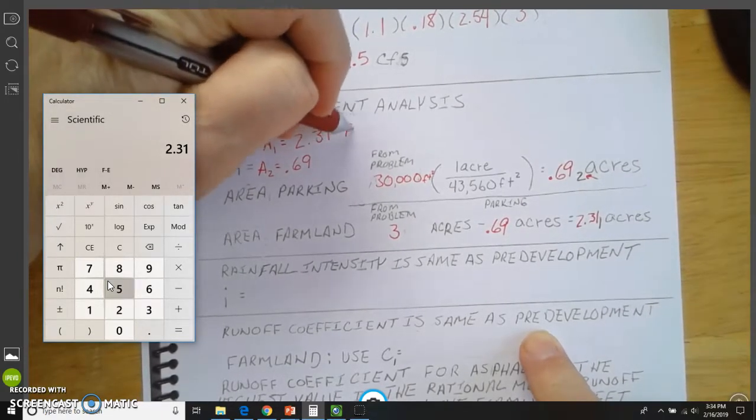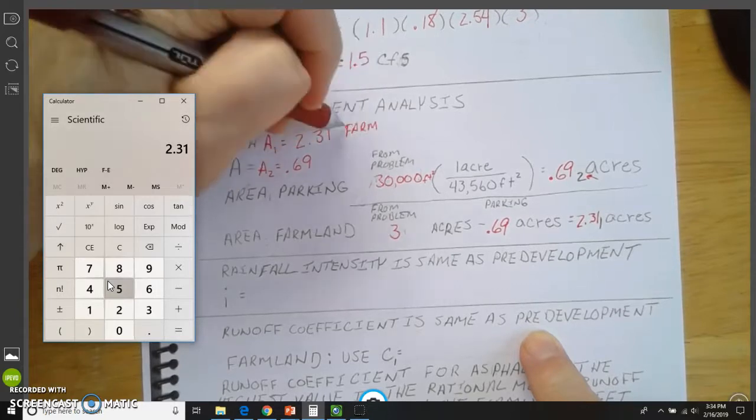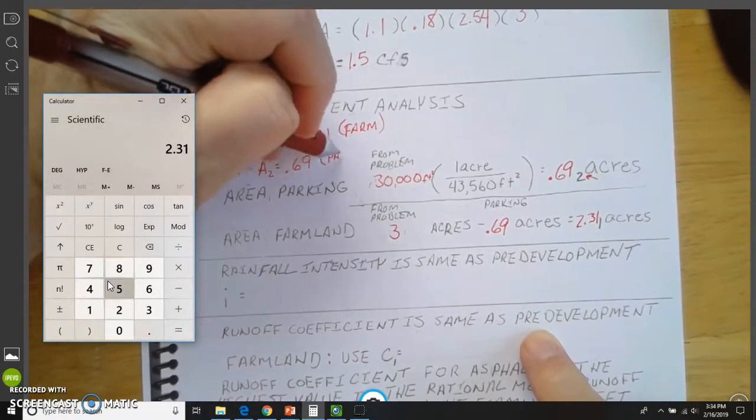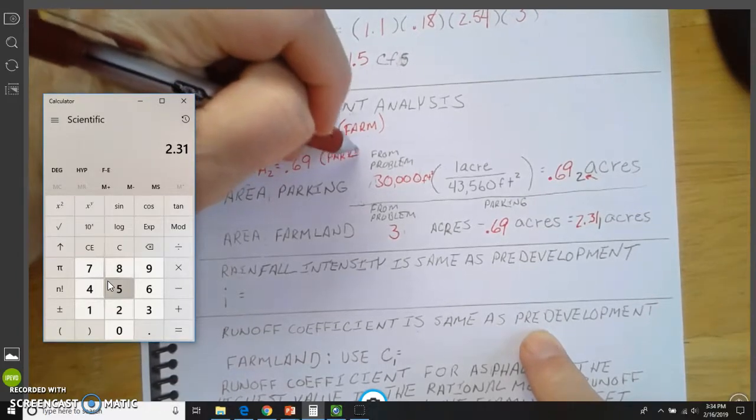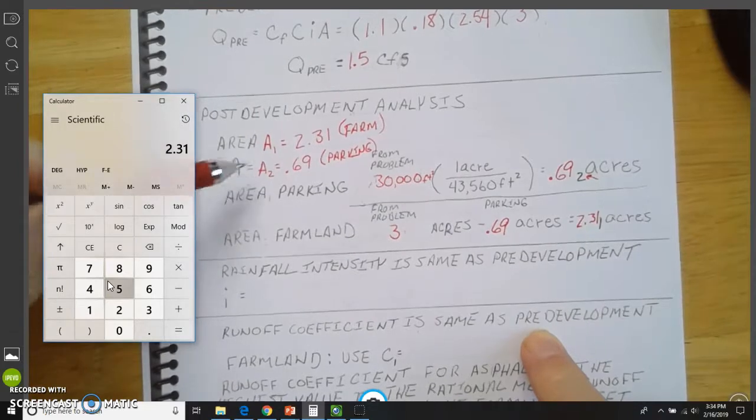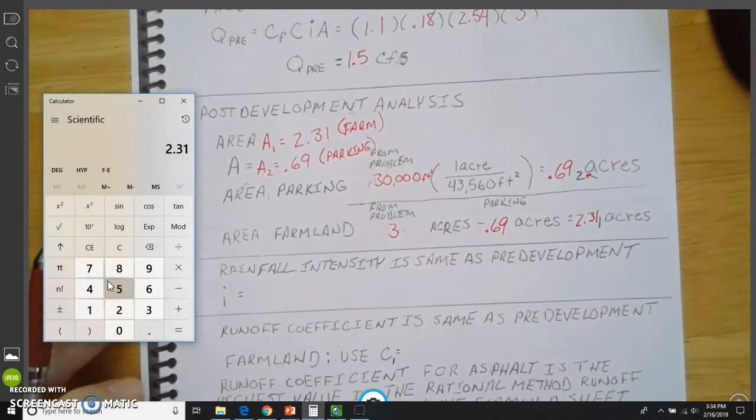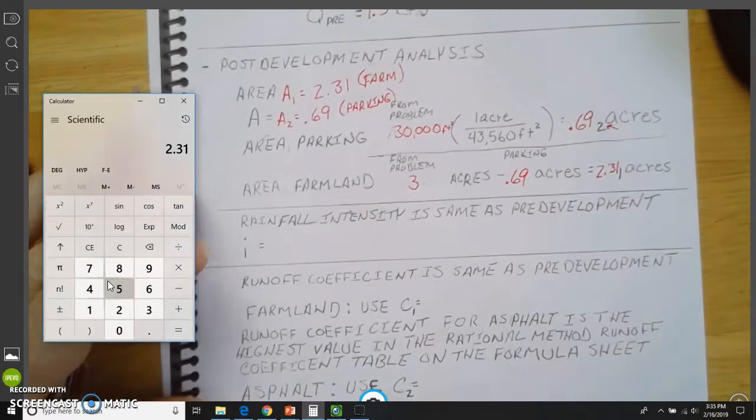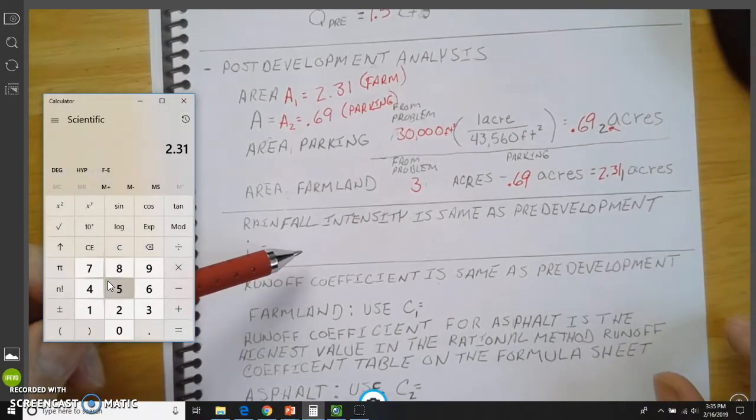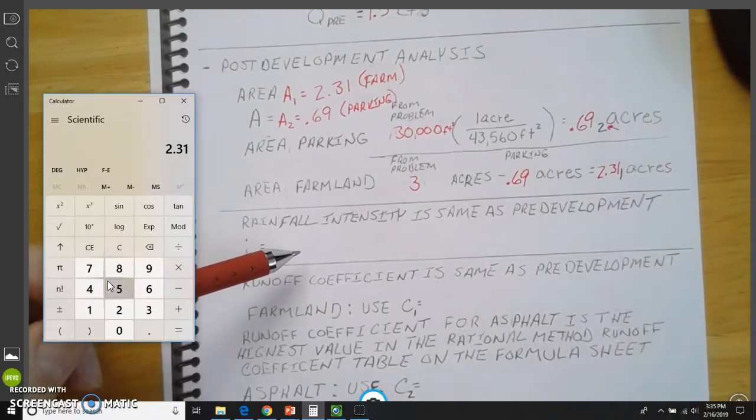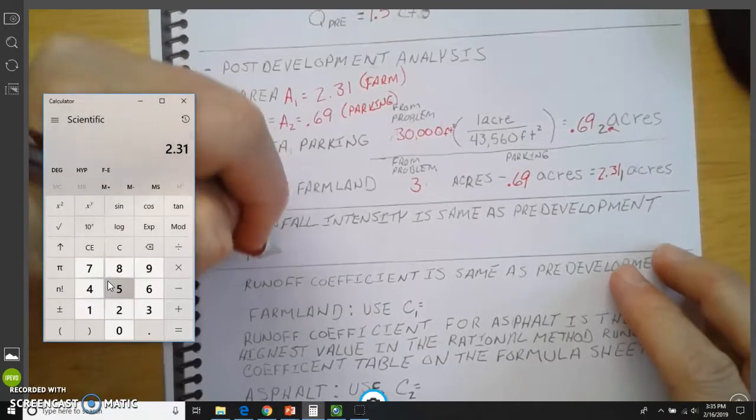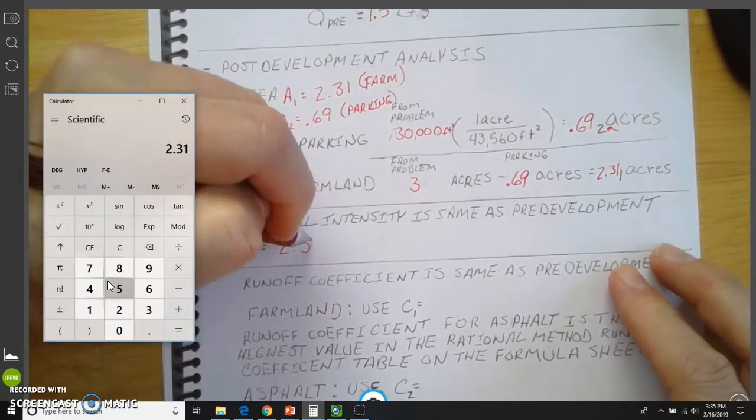So this is farm. And this is parking. And these are going to be important to keep separate later on in the problem. Rainfall intensity, that is the same number as we had for the pre-development. And that came from that chart. So that is going to be 2.54.